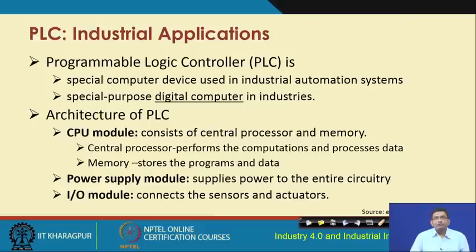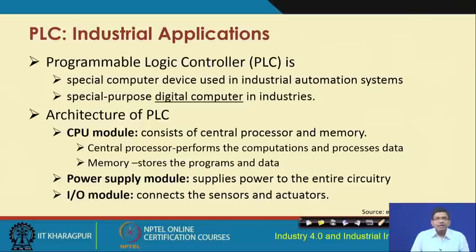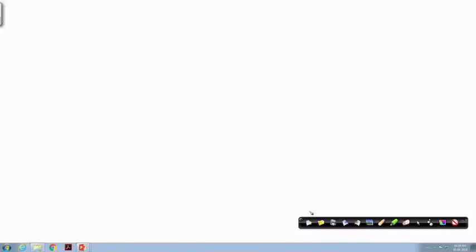These PLCs are quite widely used in industries for automation purposes, and these PLCs could be extended further to be able to serve industrial internet and IIoT requirements. A typical PLC has three different modules: the CPU module, which consists of the central processor and the memory; the power supply module, which supplies power to the entire circuitry; and the input-output module, which basically connects the sensors and the actuators.